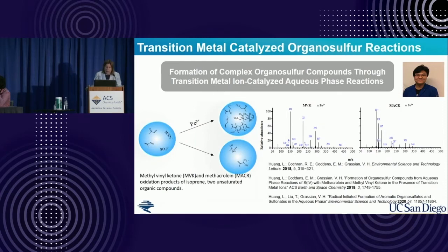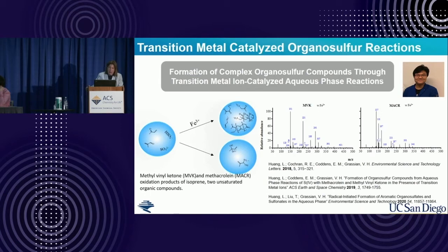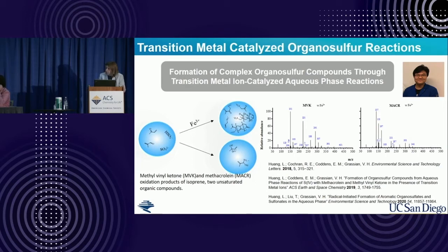Lu Bin Huang wanted to look at what happens when you have water-soluble organics—methylvinyl ketone and methyl acrylate, two oxidation products of isoprene, a very large gas-phase organic compound in the atmosphere that plays a key role—and what happens when you have iron present in that aqueous droplet. He did this under bulk aqueous conditions. What he saw was very rich chemistry: the inorganic was reacting with the organic, and we were making organosulfates and organosulfites.